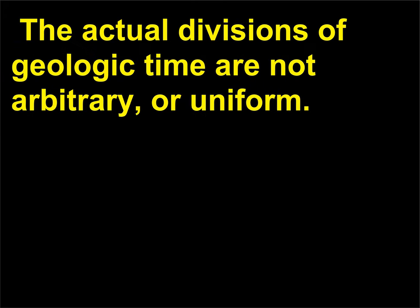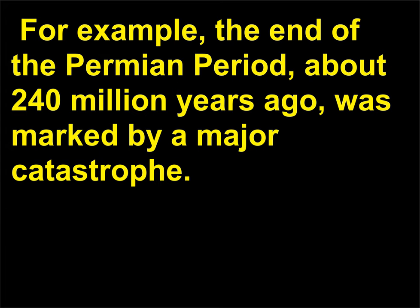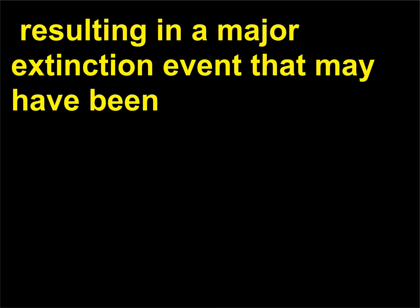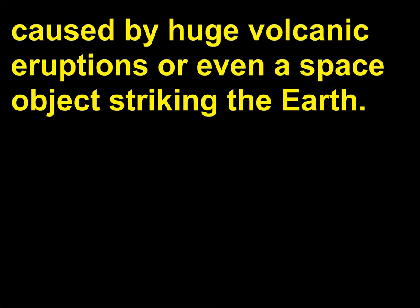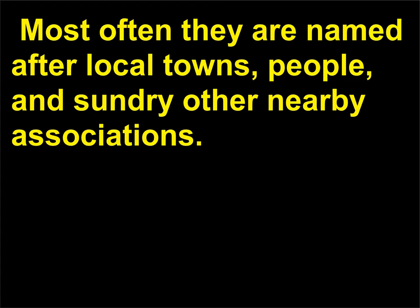The actual divisions of geologic time are not arbitrary or uniform. The larger divisions are based on major events that occurred sporadically over the Earth's long history. For example, the end of the Permian period, about 240 million years ago, was marked by a major catastrophe — some scientists estimate that close to 90% of all species on the Earth died at that time — resulting in a major extinction event that may have been caused by huge volcanic eruptions or even a space object striking the Earth. The smaller divisions are usually based on specific local structures or fossils found within the rock, and most often they are named after local towns, people, and sundry other nearby associations.